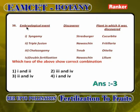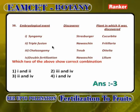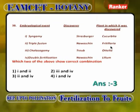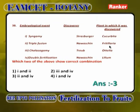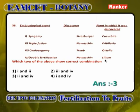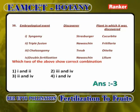Embryological events matching — which two show correct combinations? Syngamy, Strasburger, Cucurbita is wrong (Strasburger explained syngamy but not in Cucurbita). Triple fusion, Navacin, Fritillaria is correct. Chalazogamy, Troib, Betula/Votelia is wrong (chalazogamy discovered in Casuarina). Double fertilization, Navacin, Lilium is correct. Answer: 2 and 4 are correct.